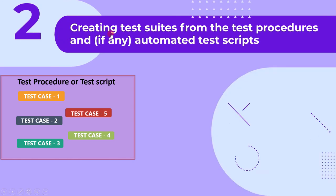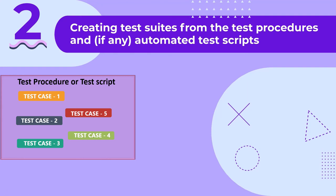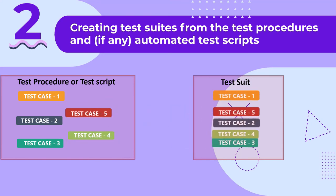The second activity is creating test suites from the test procedures and, if any, automated test scripts. In the test implementation stage, we develop low-level test cases — either test procedures or test scripts — and we also prioritize them. Based on the priority, we group them in the order of execution, and such groups are referred to as test suites. This test suite is then given to the next stage for test execution.